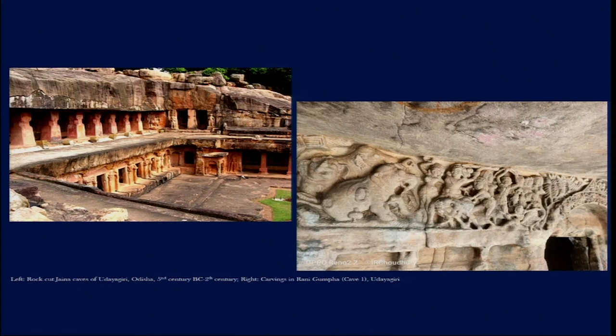These structures are made from stone but are not built for royalty — they are built as monasteries, something we have also seen in the Buddhist context. The making of such structures had roots in earlier times, predating Buddhism, and was also present in Jainism — carving existing rock into places of habitation for monks, nuns, and pilgrims.